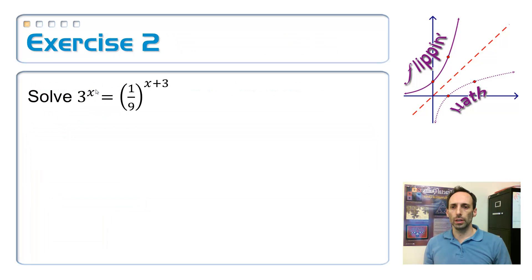So let's look at that right here on exercise 2. Solve 3^x equals (1/9)^(x+3). I can use that property of the equality of exponentials if I can make the bases the same. Can I rewrite the number 1/9 as a power of 3?